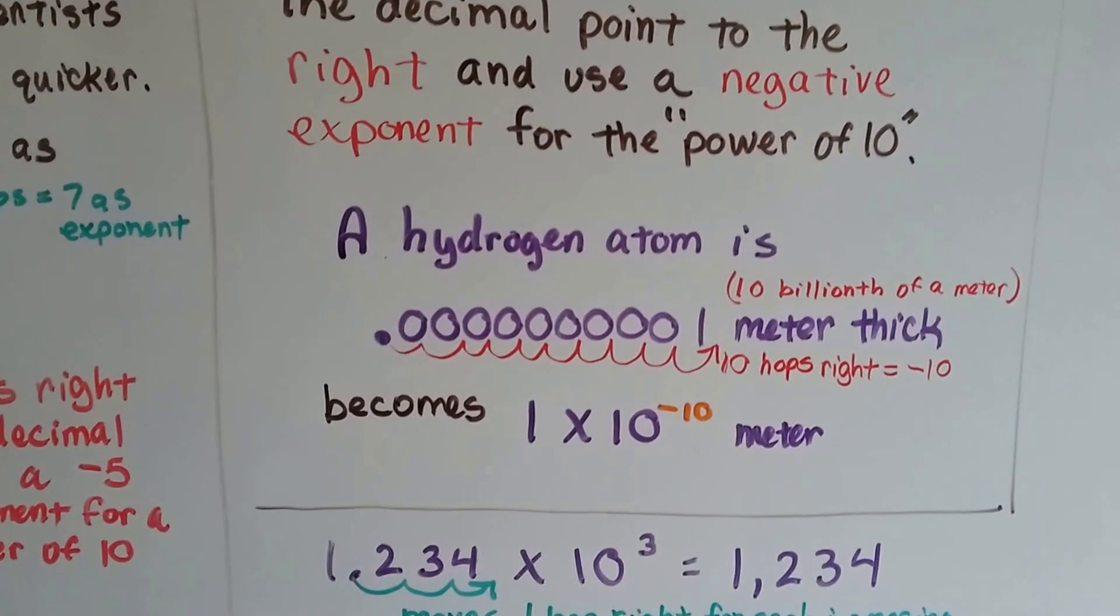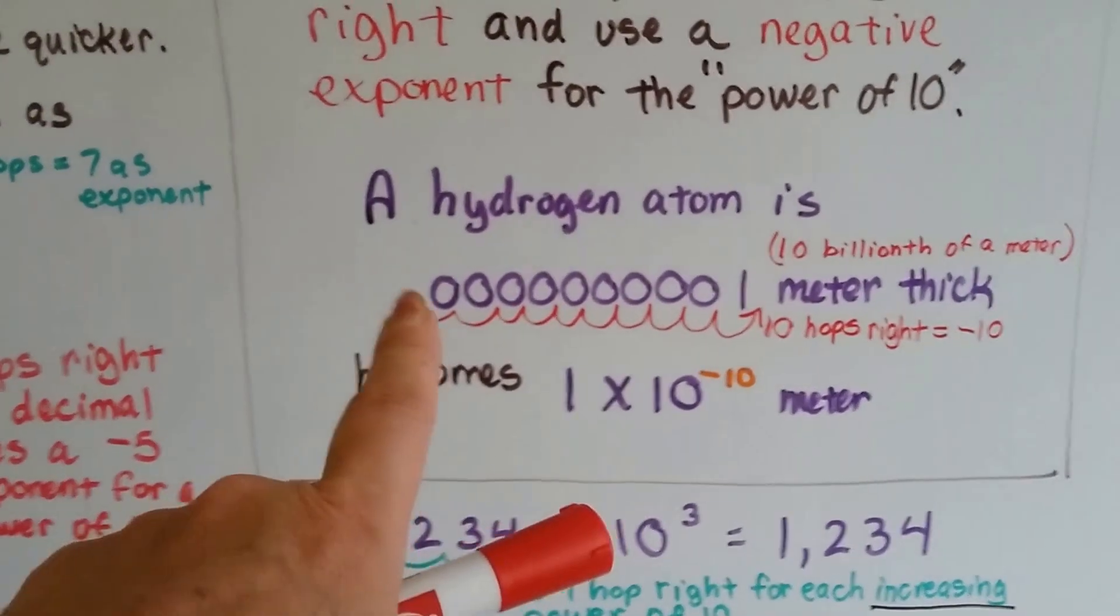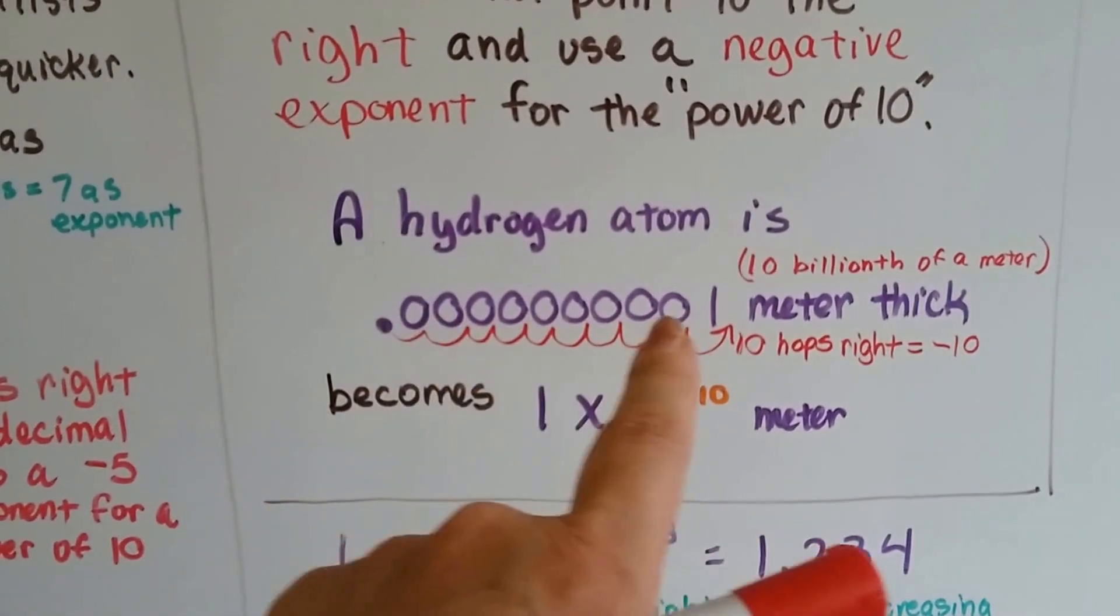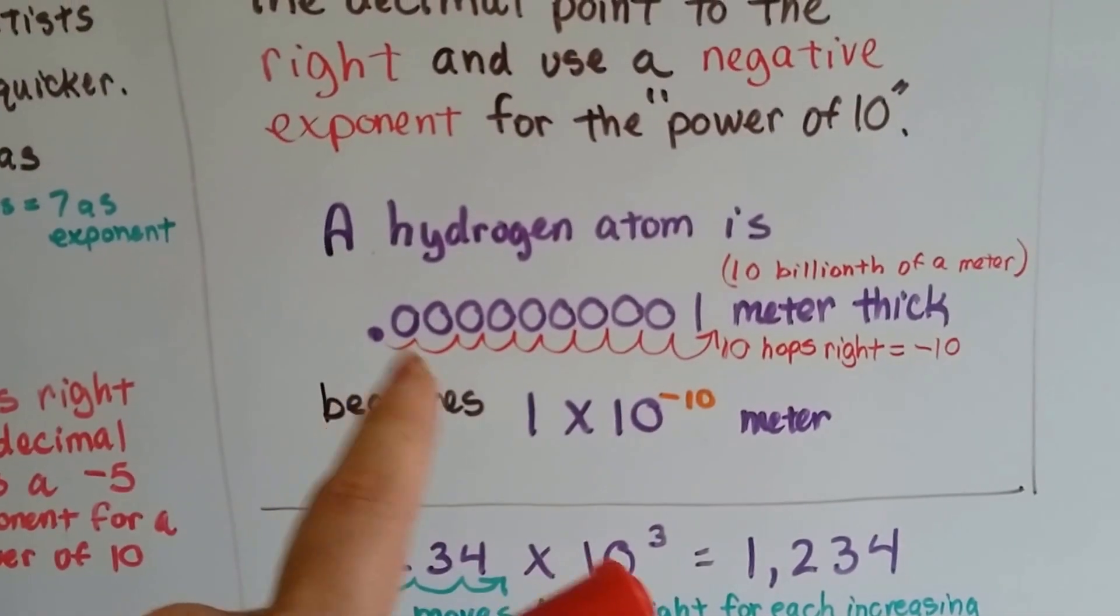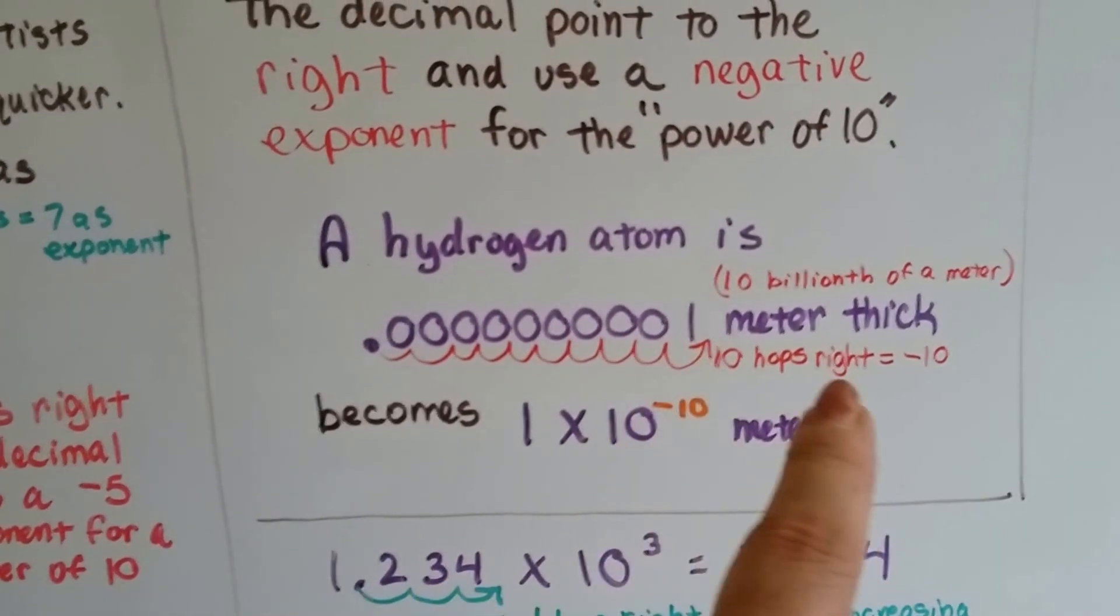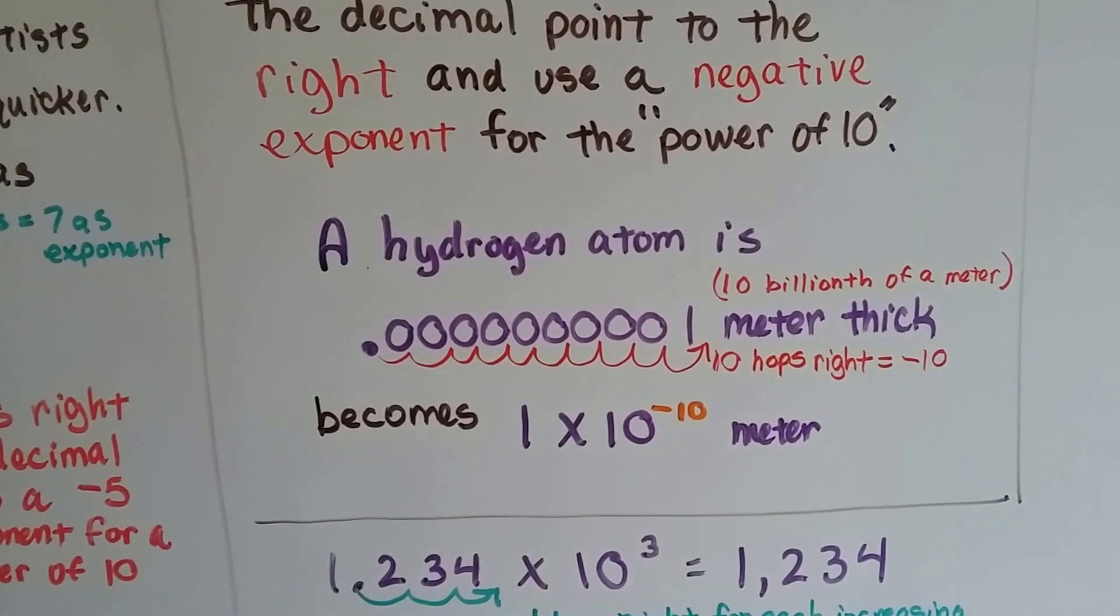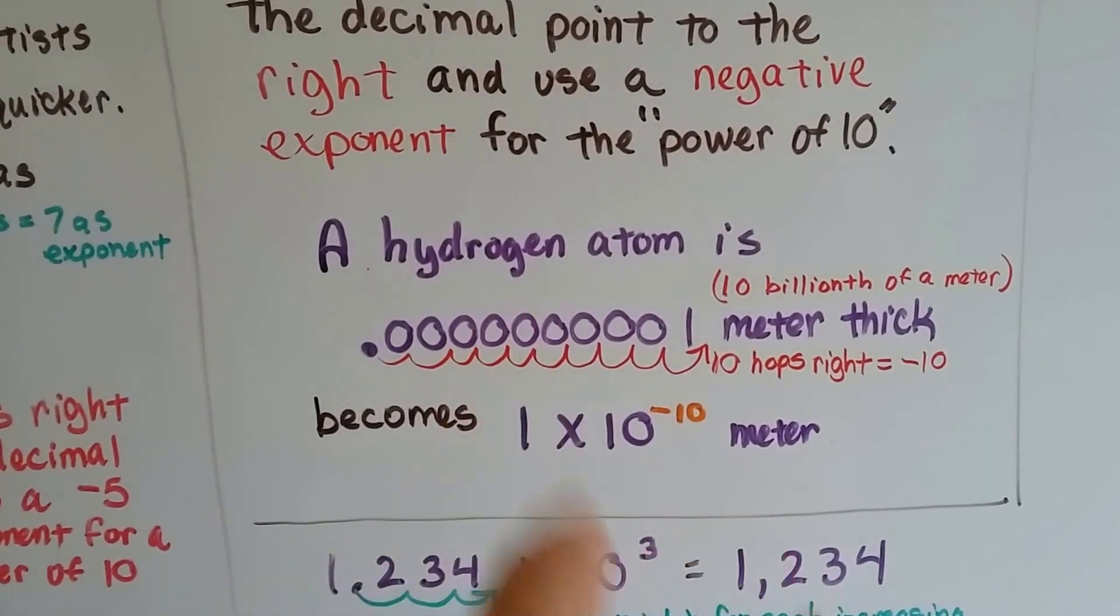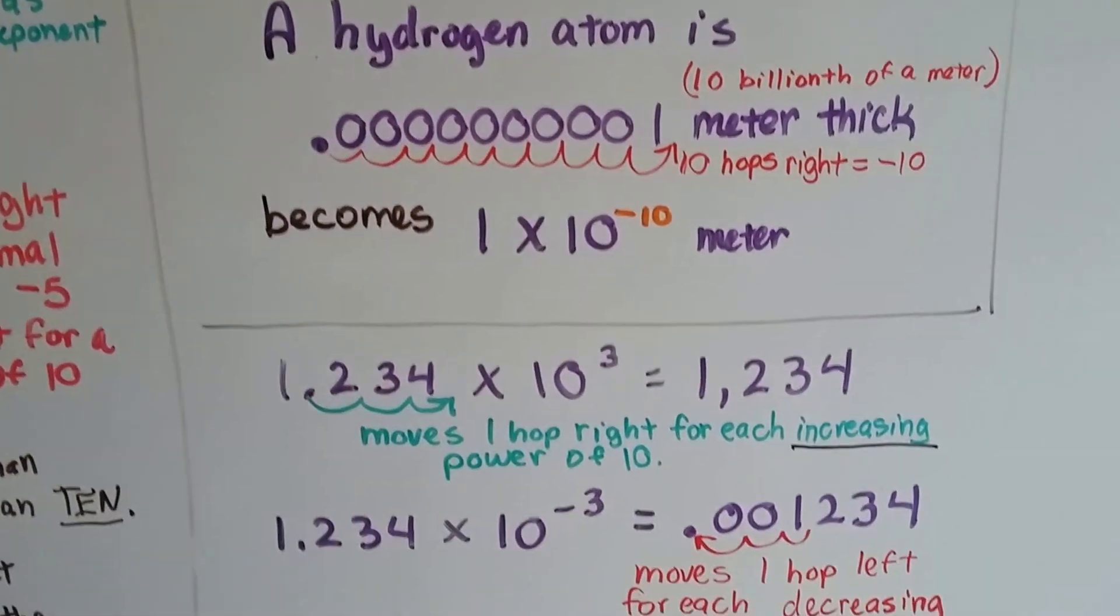A hydrogen atom is 10 billionths of a meter thick. Look at all these zeros. So what scientists do is they write it as 1 times 10 to the negative 10. We did 10 hops to the right, and that's going to equal a negative 10 for the exponent for the power of 10. See? Much easier to write this and faster than writing it this way. You've got to count all those zeros and make sure you did it right.